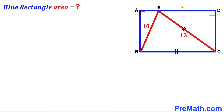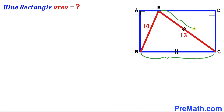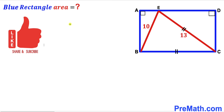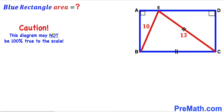In this video we have got this blue rectangle ABCD along with these two line segments BE and CE, such that side BC length equals segment CE length. Segment BE length is 10 units whereas segment CE length is 13 units. Our task is to calculate the area of this blue rectangle ABCD. Please don't forget to give a thumbs up and subscribe, and keep in mind that this figure may not be 100% true to the scale.